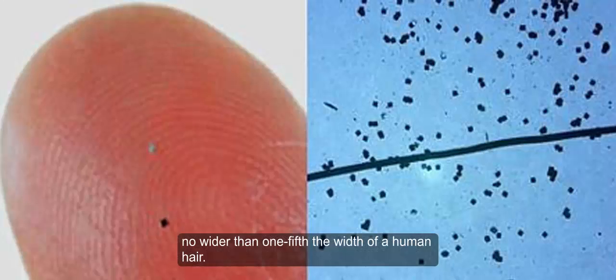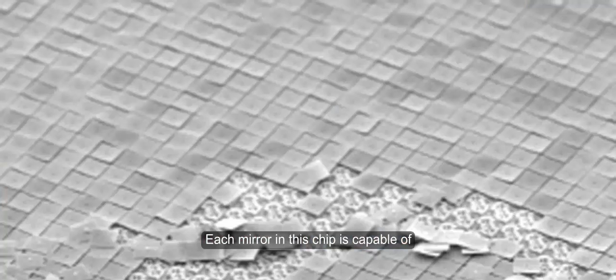Each mirror in this chip is capable of independent adjustment, moving toward or away from the light source to create a dark or light pixel.